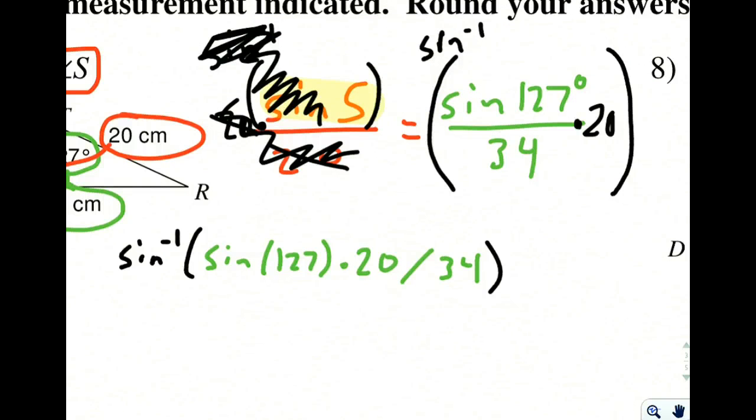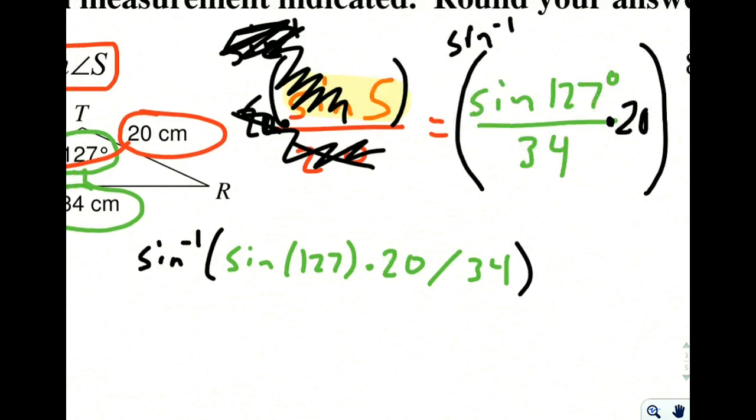and keep that all in parentheses. If we do that and we type it in, we will get 28.02 degrees. So make sure you got that same answer and you're following these same steps.